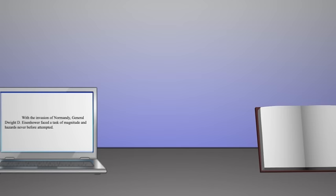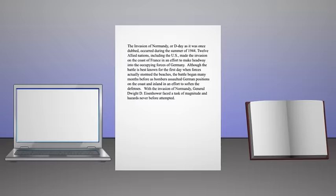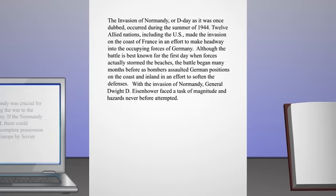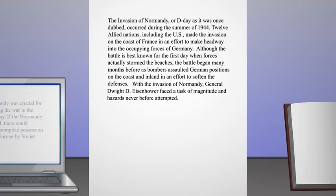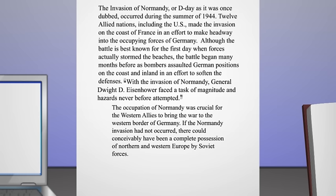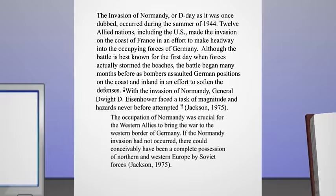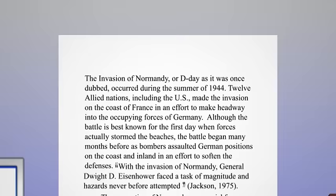But sometimes people plagiarize without intending to. When you take sections of other people's work and include it in your paper, you must let the reader know which words and ideas are yours and which ones are someone else's. One way to do this is simply to quote your source — put quotation marks around it, or block quote longer sections, and say where the quote came from. But you also need to cite the source of material you use in your writing, even if you're not quoting it word for word.